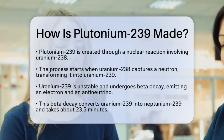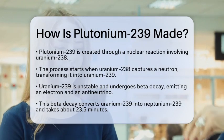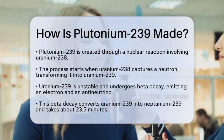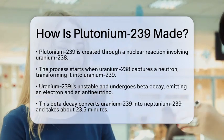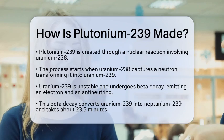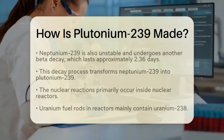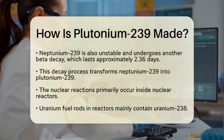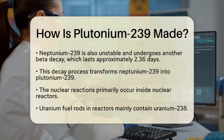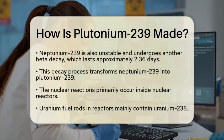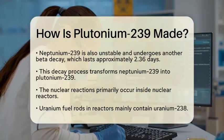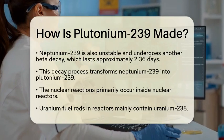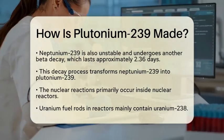Now, Uranium-239 is not stable. It undergoes a process called beta decay. During this decay, Uranium-239 emits an electron and an antineutrino, changing into Neptunium-239. This first step takes about 23 and a half minutes.